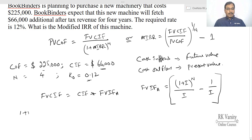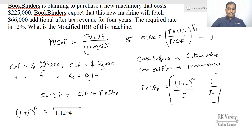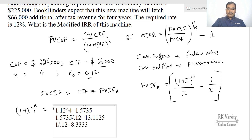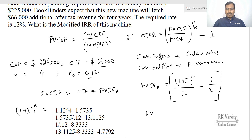First, calculate (1 + i)^n: that is 1.12 raised to the power of 4. Then divide by i: 1.5735 / 0.12. Next, compute 1/i = 1/0.12. Finally, FVIFA = 13.1125 minus 8.333, giving a future value interest factor annuity of 4.7792.